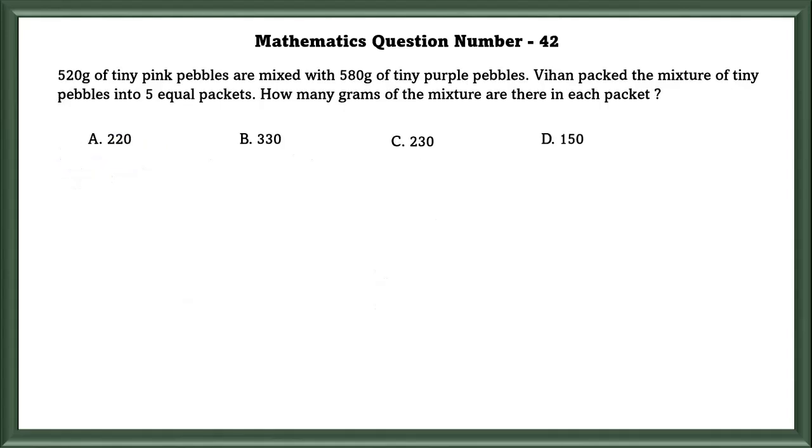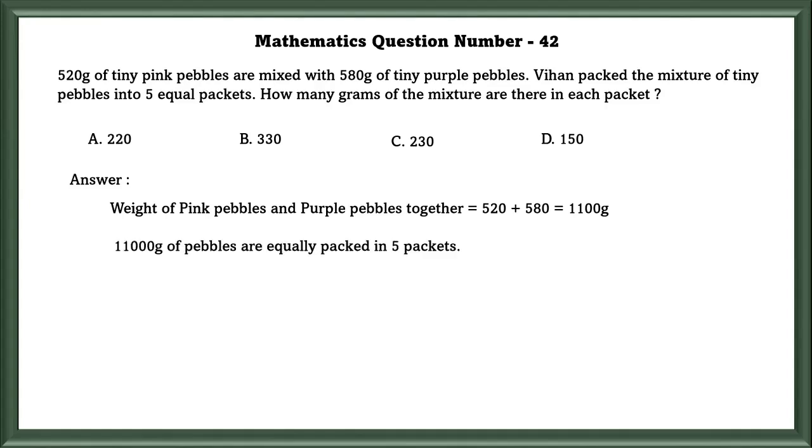Mathematics question number 42. 520 grams of tiny pink pebbles are mixed with 580 grams of tiny purple pebbles. We bag the mixture of tiny pebbles into 5 equal packets. How many grams of mixture are there in each packet? We have to first find the total of pink and purple pebbles, which equals 1100. In order to find how many grams are there in each packet, we have to divide it by 5. If we divide, we will get 220. So there are 220 grams in each packet.